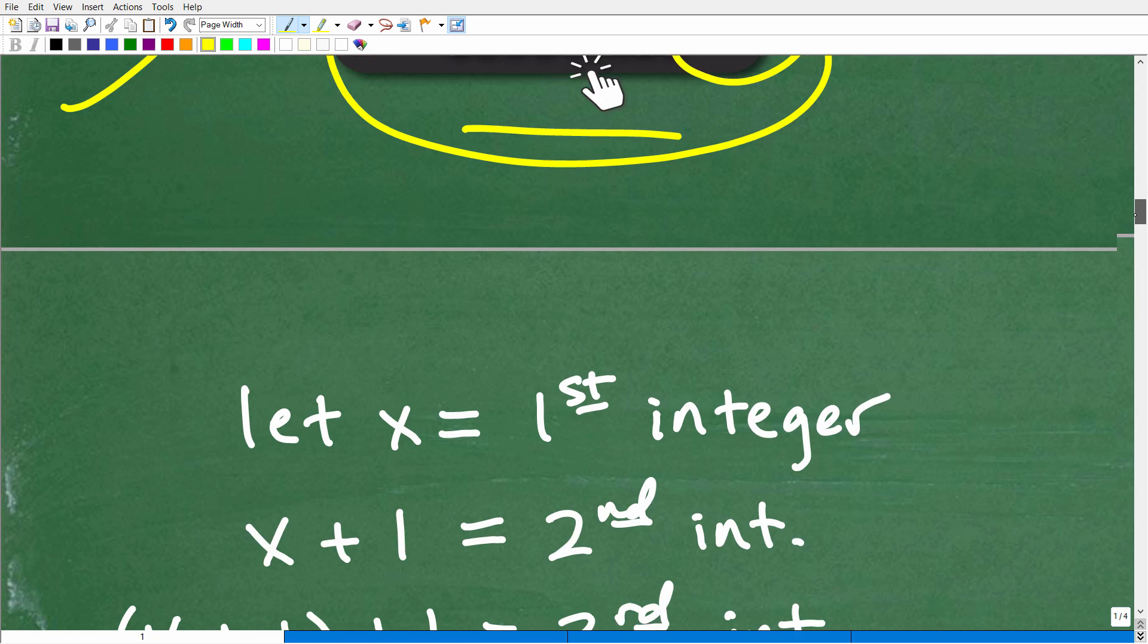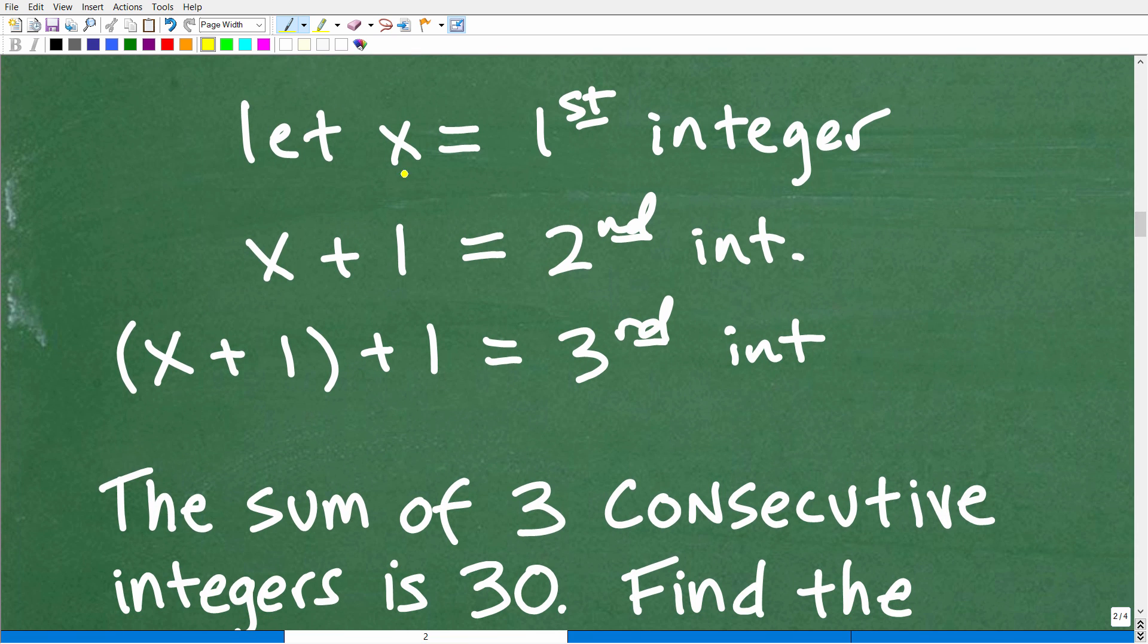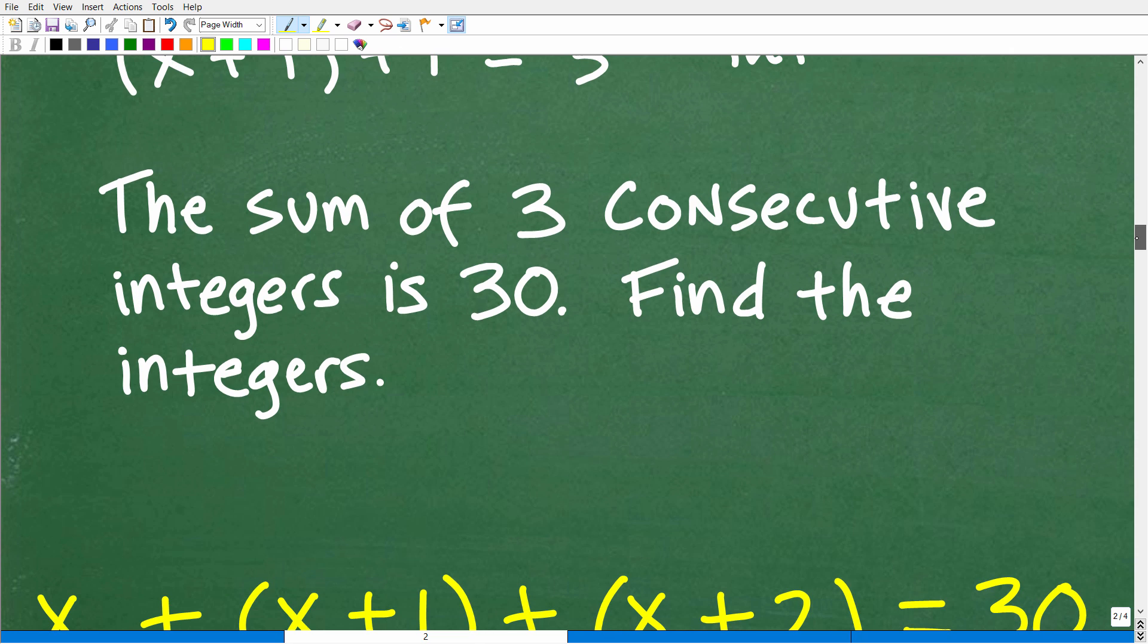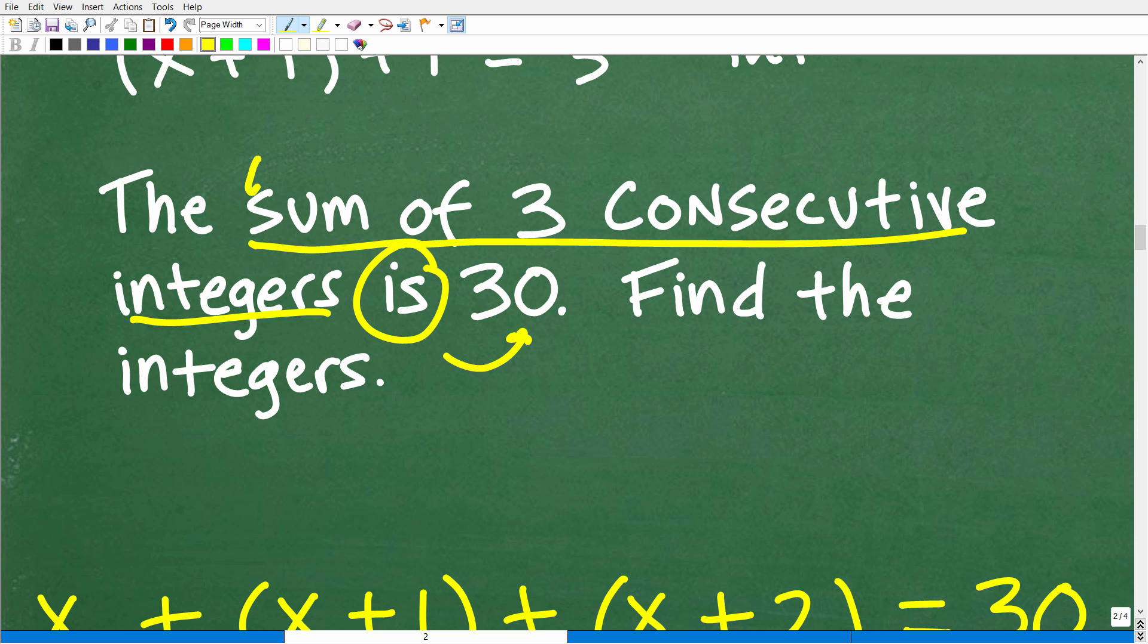All right, so let's go ahead and pick this problem up. So now we have our model. X is our first integer, X plus 1 is our second integer, and X plus 1 plus 1 is our third integer. All right, so let's kind of reference back to the problem. So the sum of these three consecutive integers, right, we have a model now of these three consecutive integers, but the sum is 30.